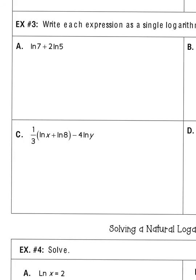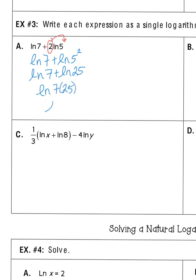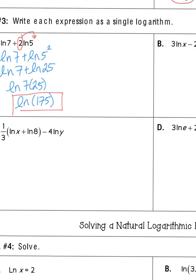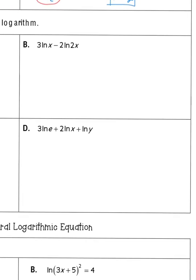For part a of compression problems, we start by moving any coefficients up as exponents. We get natural log of 7 plus natural log of 5 squared. Since 5 squared is 25, and these are being added, we multiply: natural log of 7 times 25, which gives natural log of 175. You can pause the video at any time because all of this should be familiar since not much is different from a regular log.